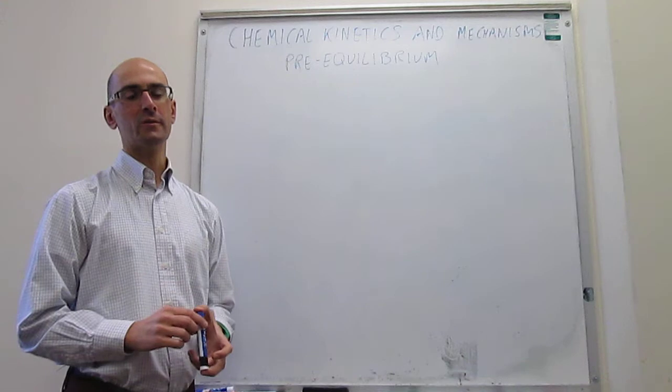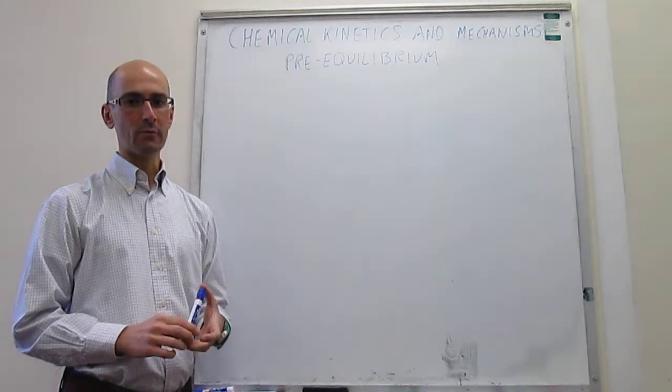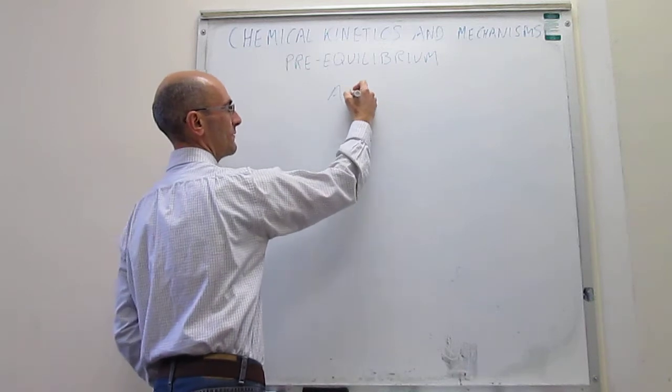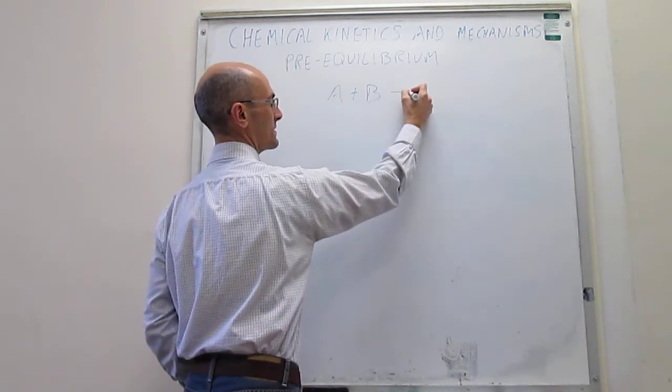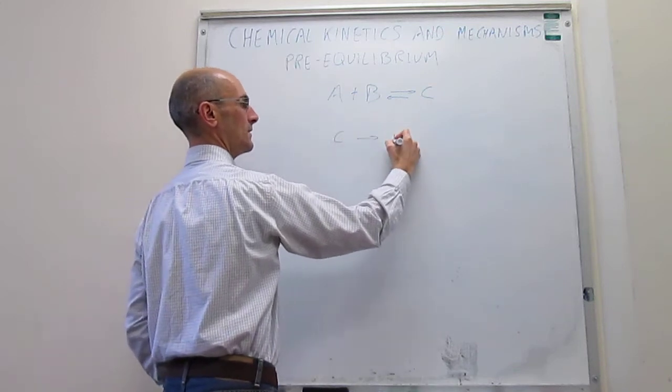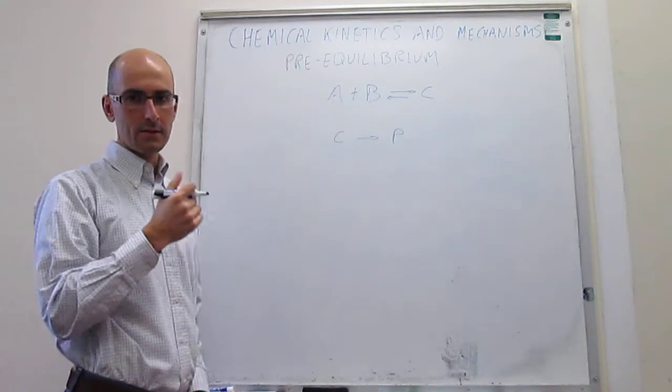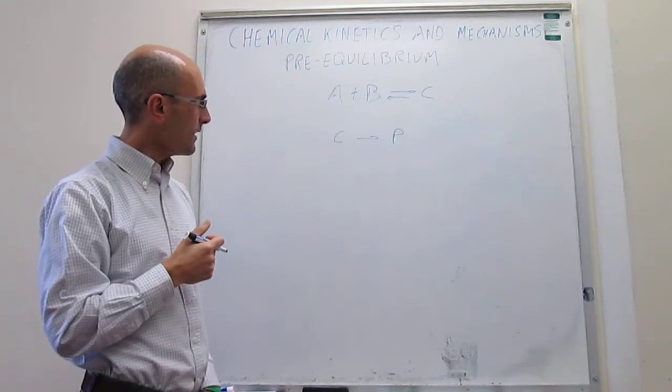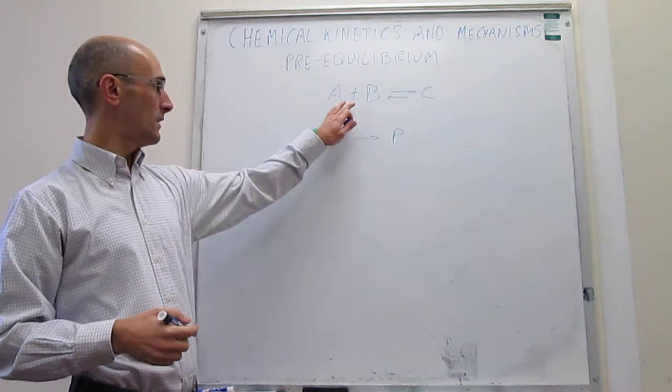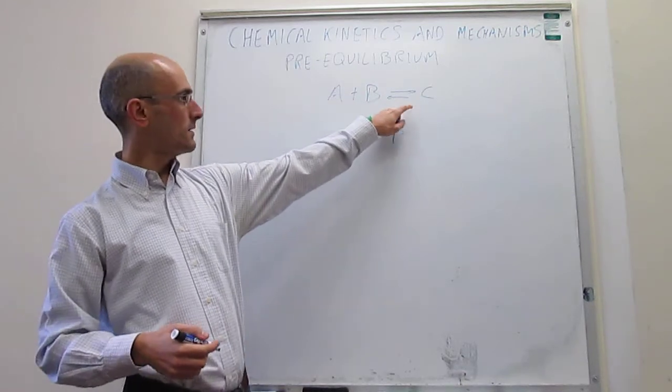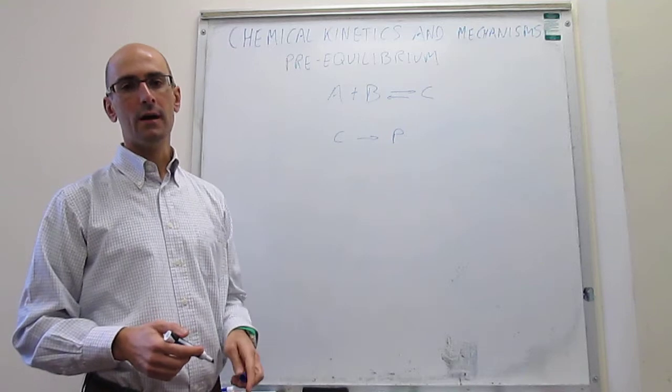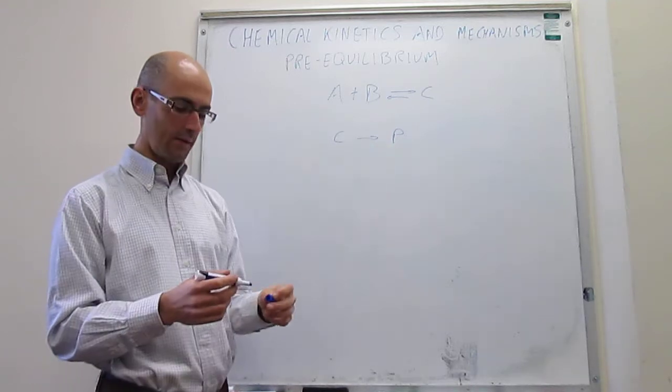In this video, we are going to learn how to treat a pre-equilibrium situation. Suppose that you have a reaction A plus B to give C, and then C generates a product. This is a situation of a consecutive reaction in which you have two reagents. They generate an intermediate, and then that intermediate, in a separate step, reacts to get the products.